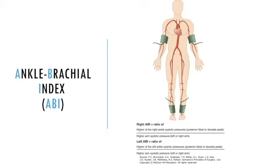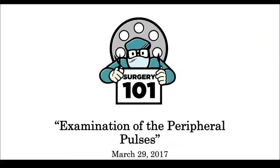The ankle brachial index, or ABI, is a quick screening test for PAD. The ABI for each lower extremity is calculated by dividing the higher ankle pressure — either the dorsalis pedis or posterior tibial in each leg — with the higher brachial pressure between both arms. A handheld Doppler is often used rather than a stethoscope to measure the systolic pressures. In the Surgery 101 podcast, Dr. Cox shows how to measure the ABI and use the handheld Doppler.